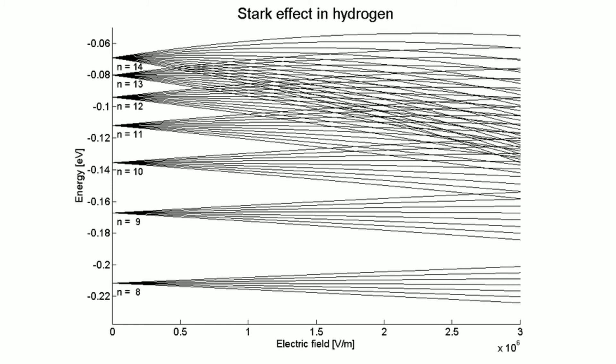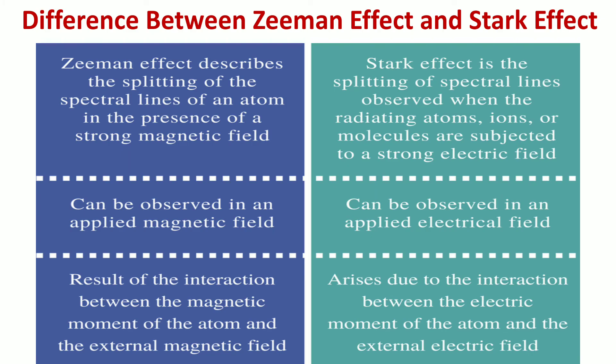The basic difference between the Zeeman effect and the Stark effect: the Zeeman effect describes the splitting of the spectral lines of an atom in the presence of a strong magnetic field. In the case of the Stark effect, it is the splitting of spectral lines observed when the radiating atoms, ions, or molecules are subjected to a strong electrical field.